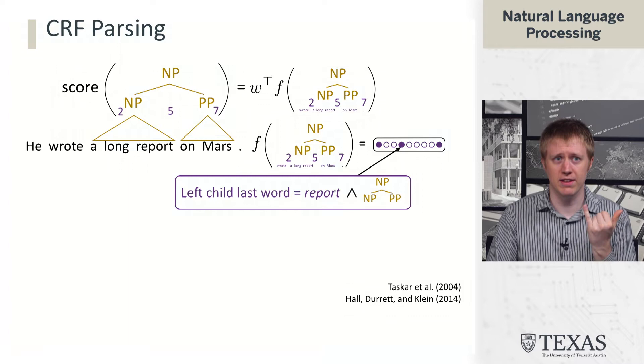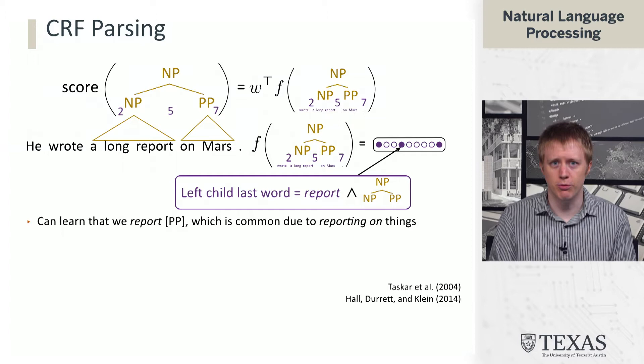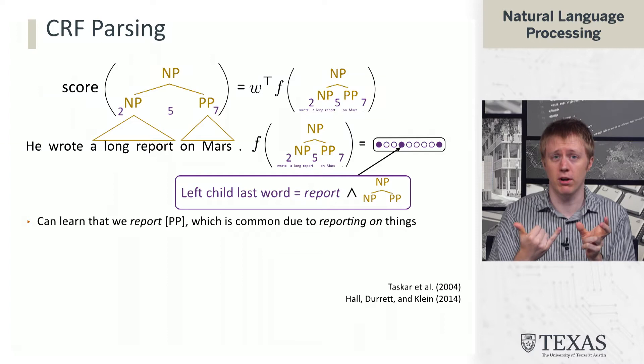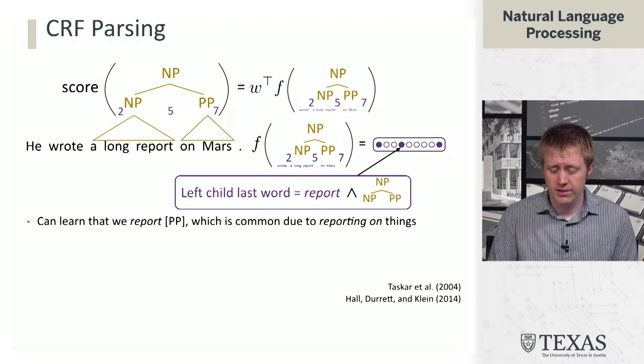We're looking at a complex property of the input that also depends on the particular grammar rule we're using. This is a very useful feature — it can learn things like if you have a noun phrase that ends in 'report', it's often going to attach to a prepositional phrase, because you often report about stuff. For example, 'You report on Mars.'